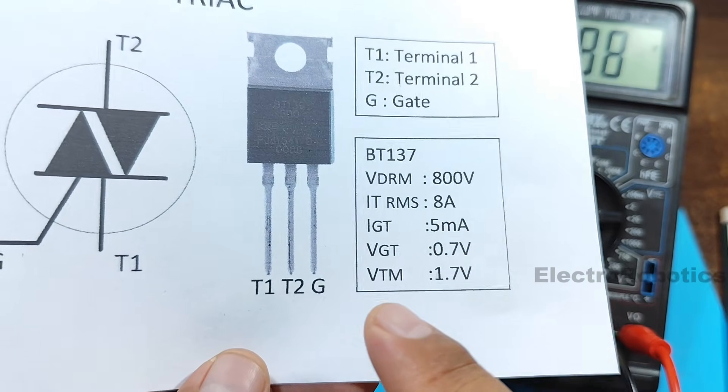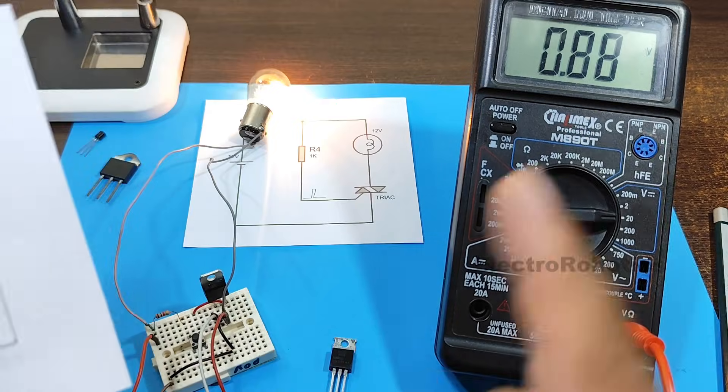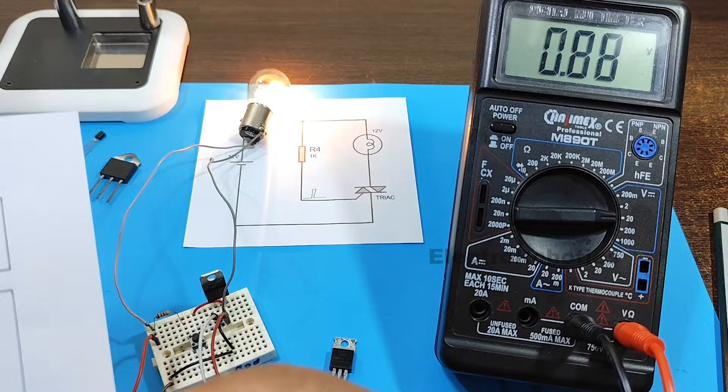And as you may recall, the maximum voltage should be 1.7 volts. However, this voltage will increase as the current increases.